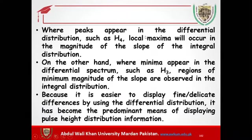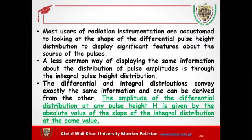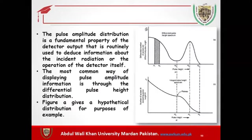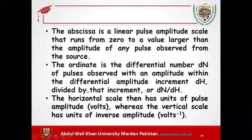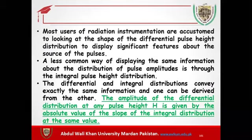Where peaks appear in the differential distribution — such as at H4 — local maxima will occur in the magnitude of the slope of the integral distribution. If you look at H4 in the integral, you will see maximum slope at that point. H4 is the maximum height, and it gives you the maximum slope — the maximum rate of change — when viewed in the integral.